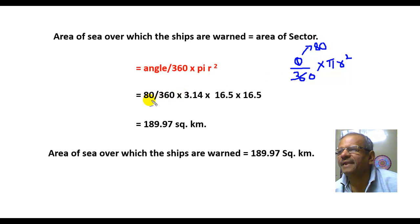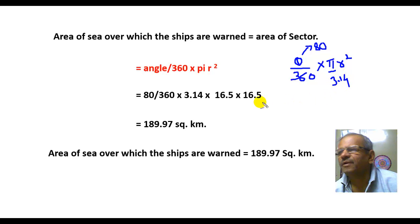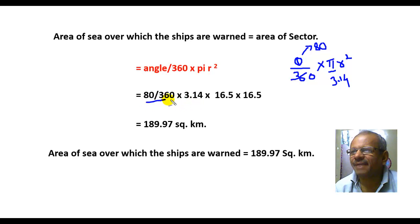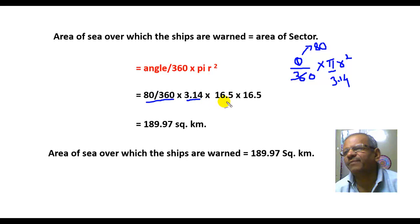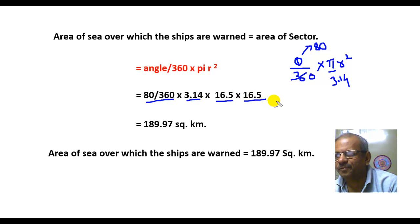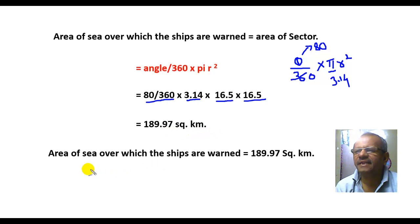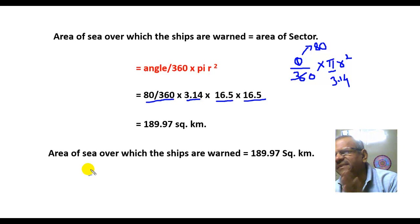So it will be 80 divided by 360, with pi taken as 3.14, and r squared as 16.5 multiplied by 16.5. Solving this, you get 189.97 square kilometers. Therefore the area of sea over which the ships are warned is equal to 189.97 square kilometers.